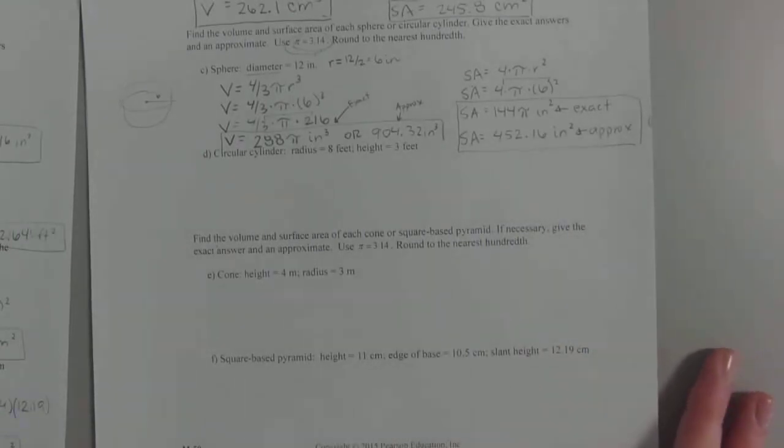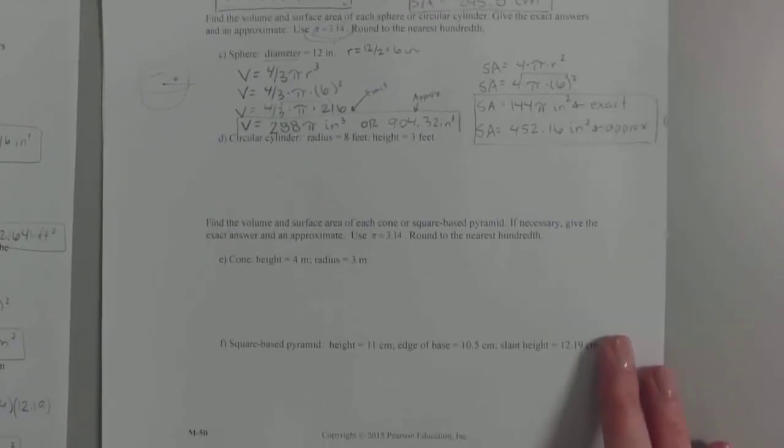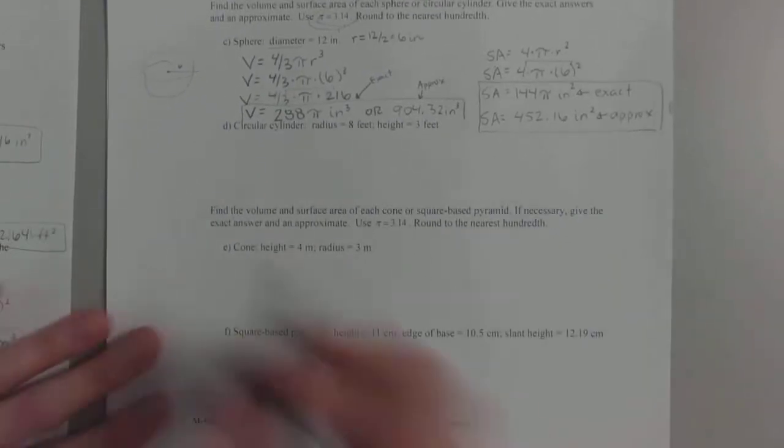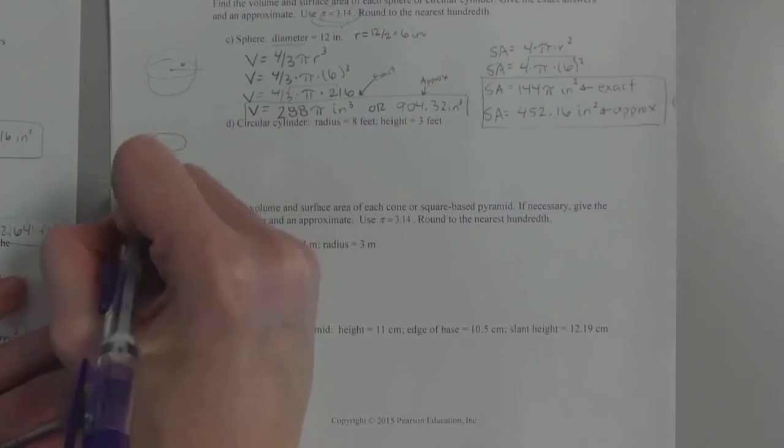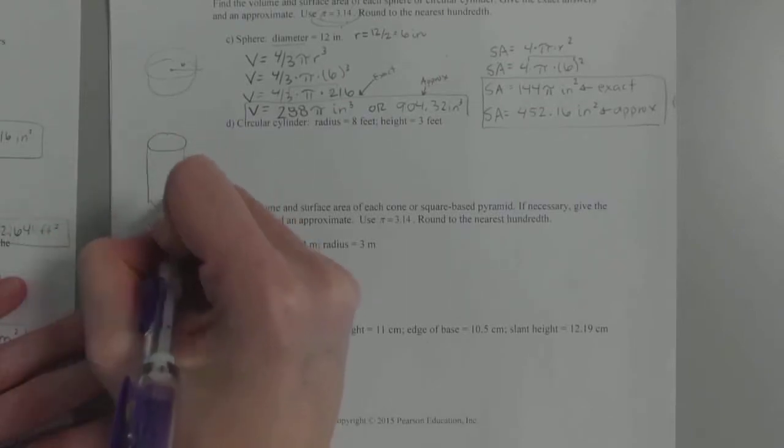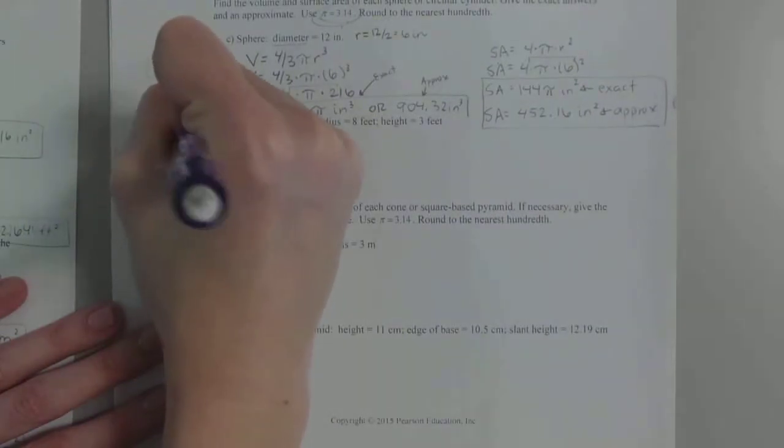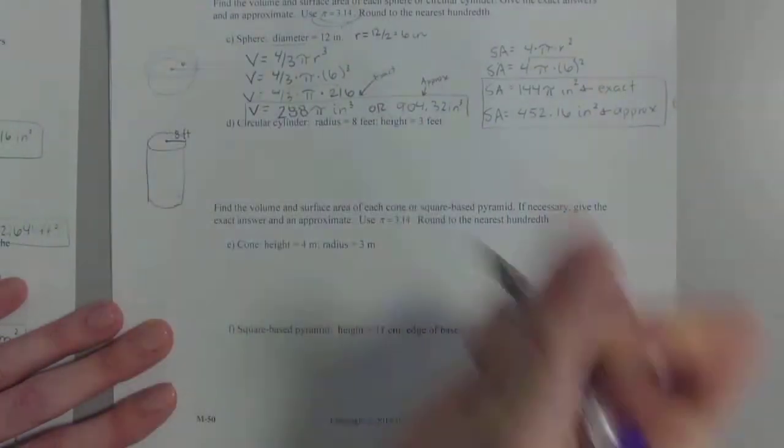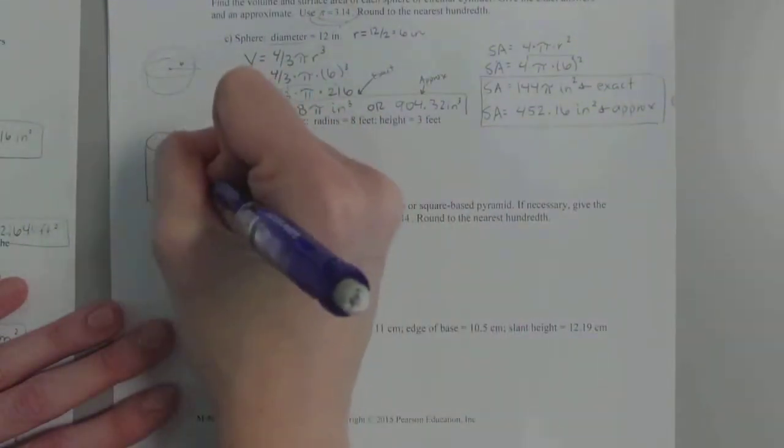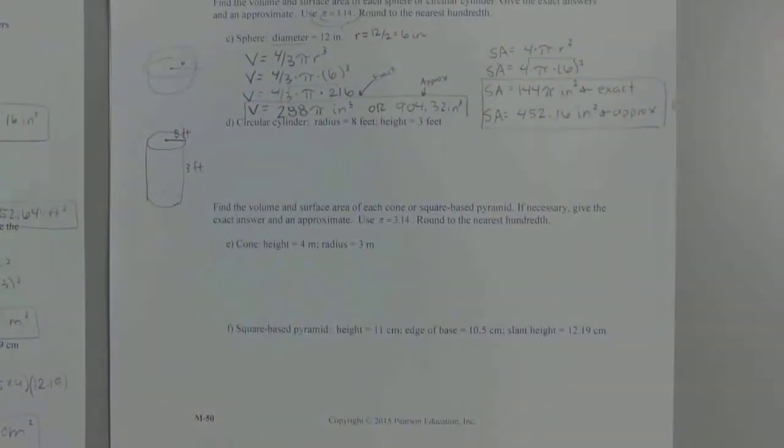All right, so this is where it just gets uglier and uglier. On D, circular cylinder, again I think of my oats. If you like drawing, have fun with this. We are given the radius, which is nice. So our radius is 8 feet, and then we are given a height of 3 feet. And that's all we need for our two formulas, 8 feet and 3 feet.